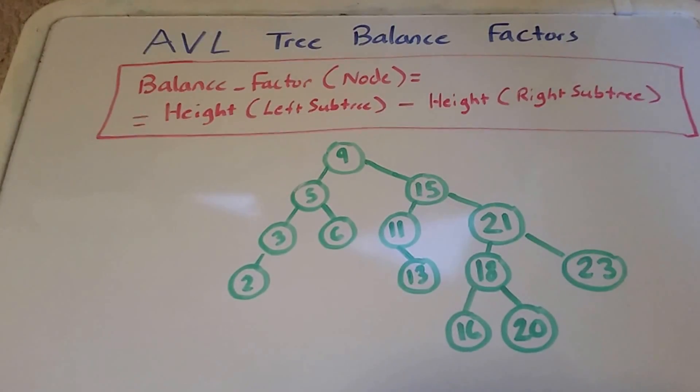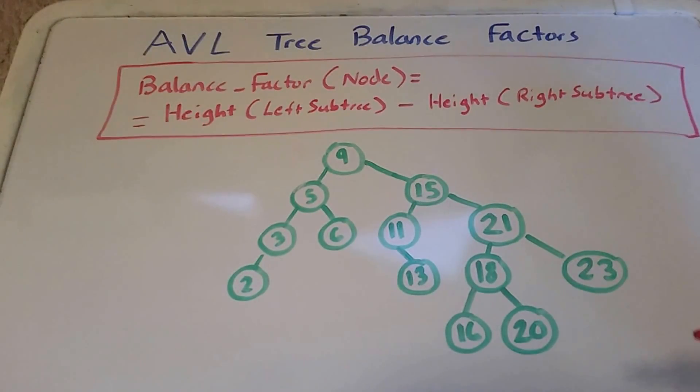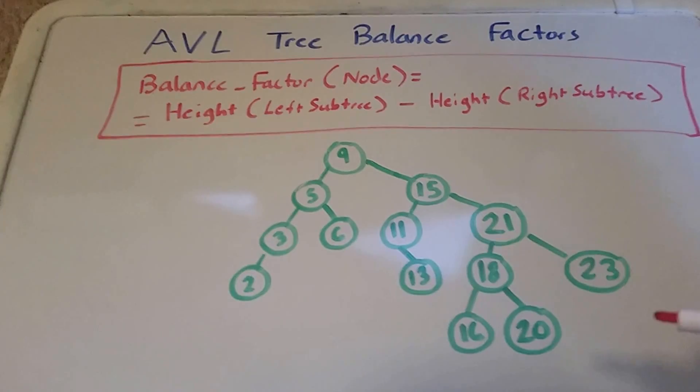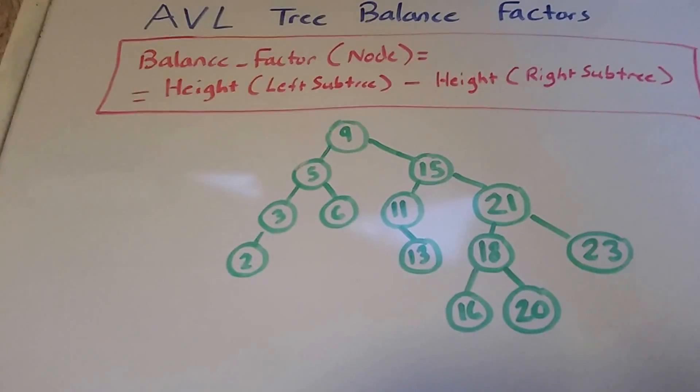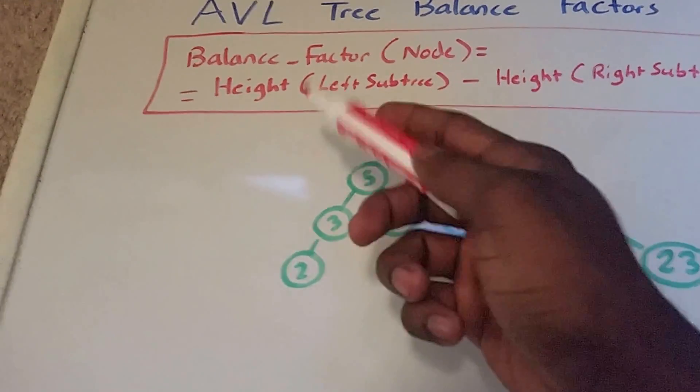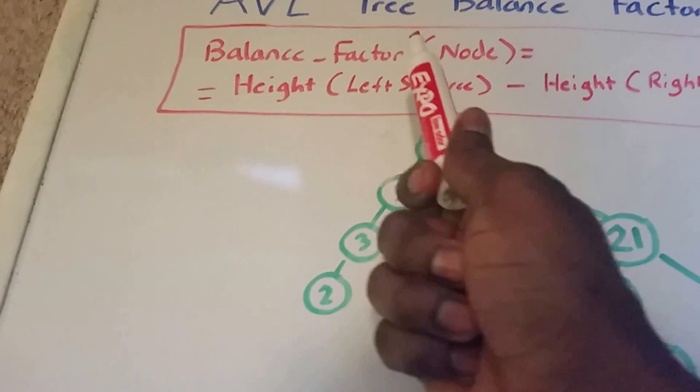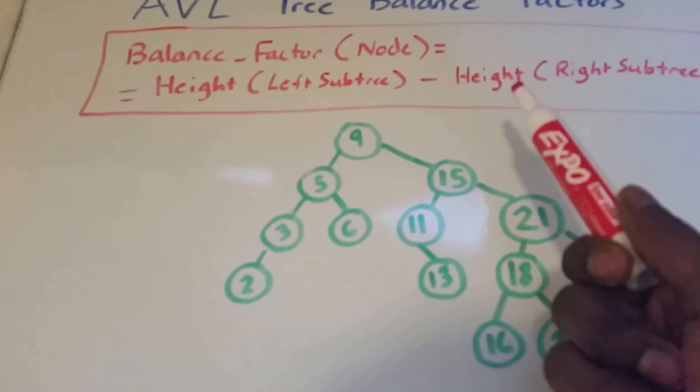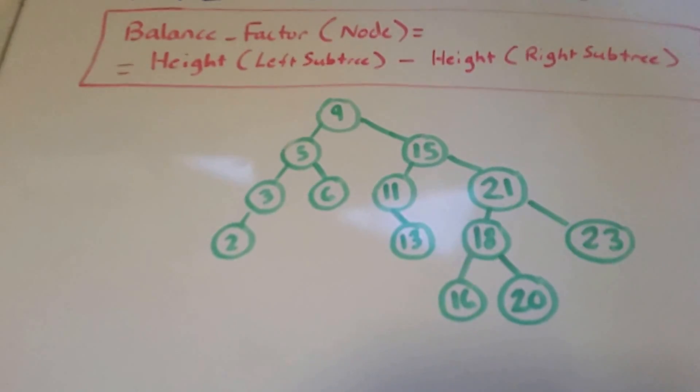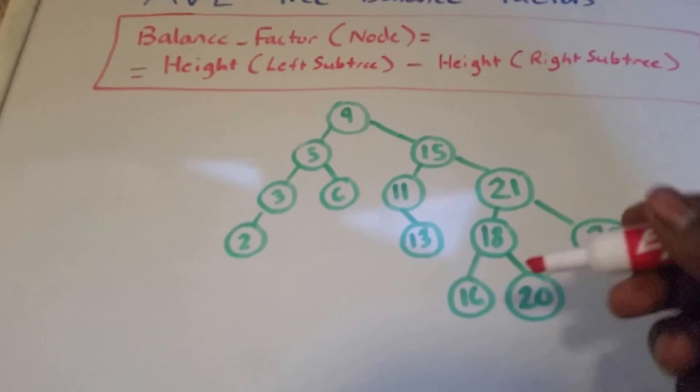And the heights of the two child subtrees to any node should not differ by more than one. And this is how we calculate that difference. The balance factor of the current node is equal to the height of the left subtree minus the height of the right subtree. Okay, so let's go ahead and do this.